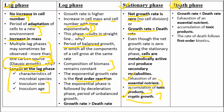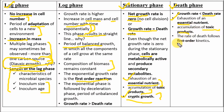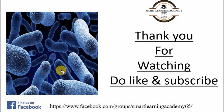In the death phase, the growth rate is less than the death rate. The reasons are exhaustion of essential nutrients and accumulation of toxic products, and the death kinetics also follow first-order kinetics. Please do like and subscribe to my channel for more updates. Thank you.